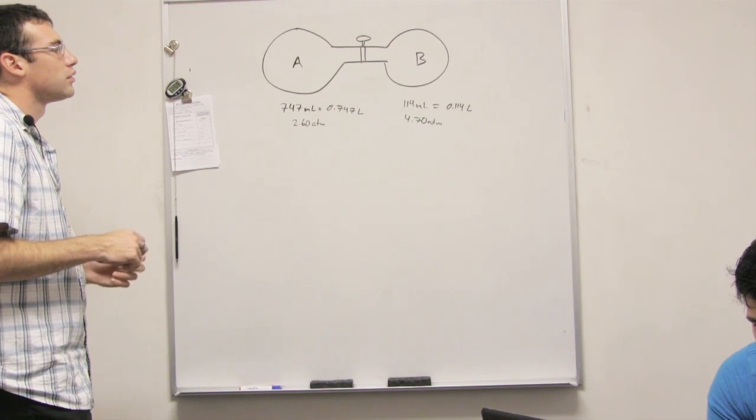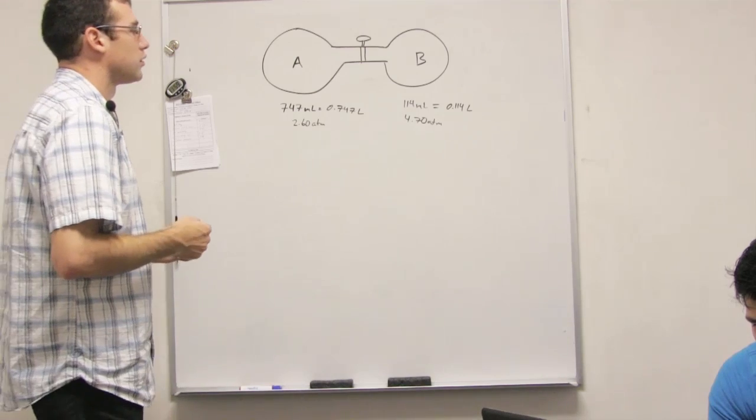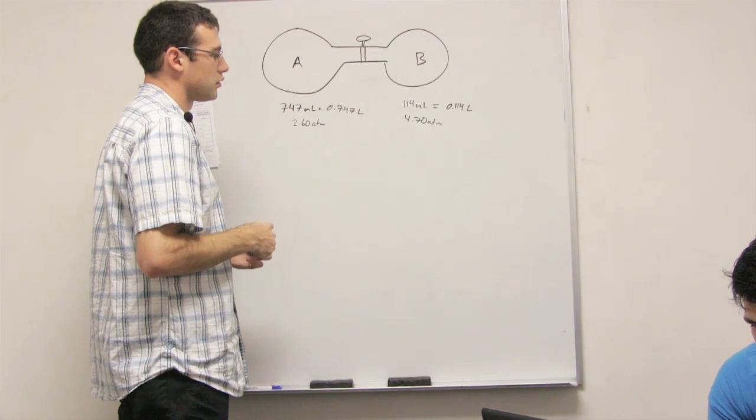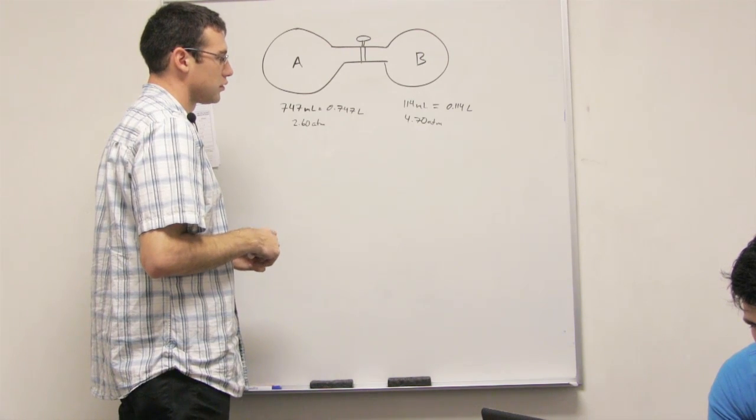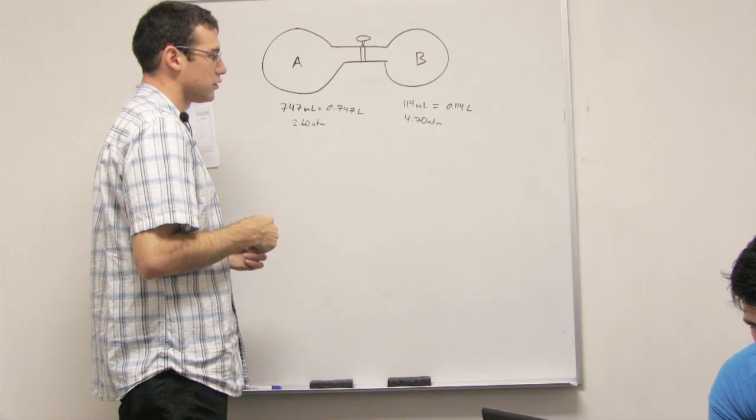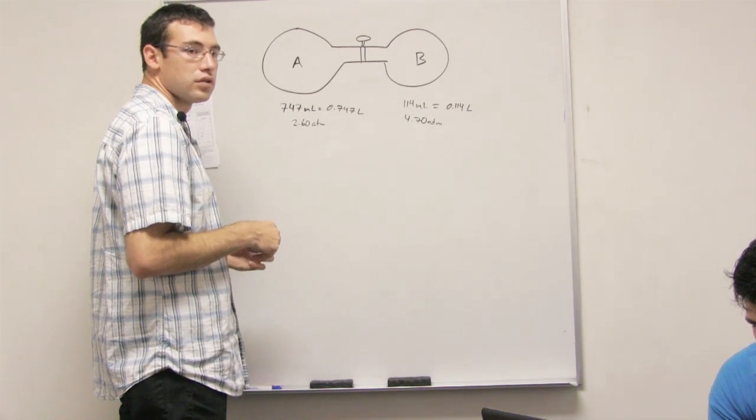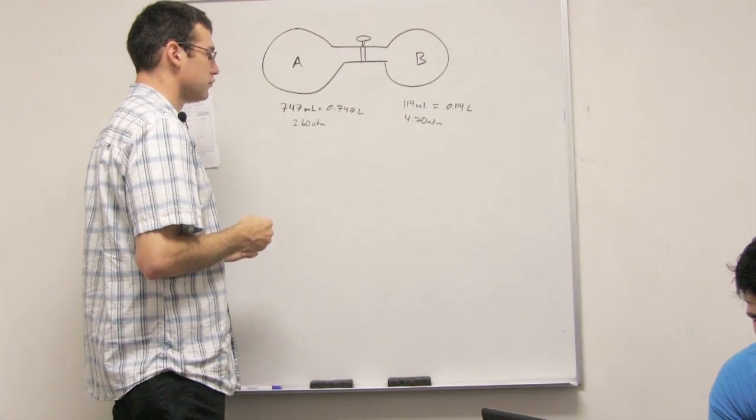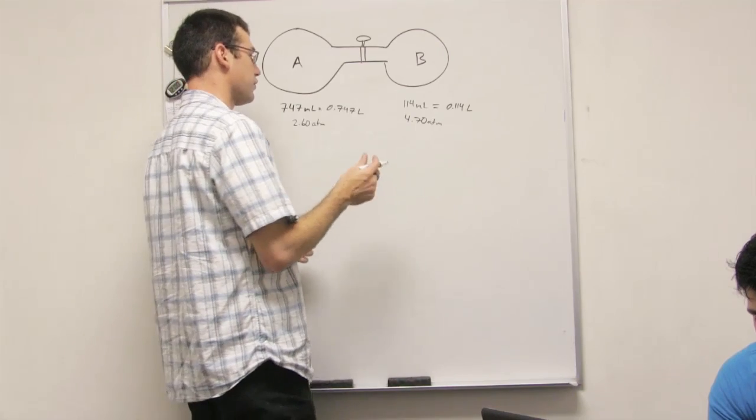It's very touchy. Are you using PV equals nRT for that? I'm trying to think how we did it in class. Oh, I think I know. What we have to do is add up the two volumes together now. We're going to add the two volumes together.